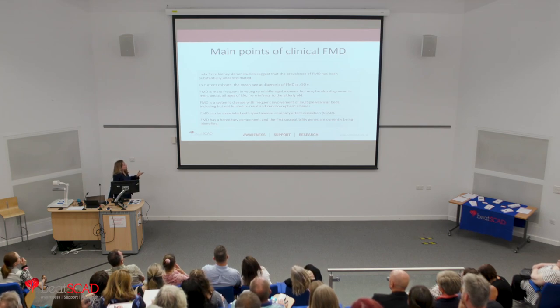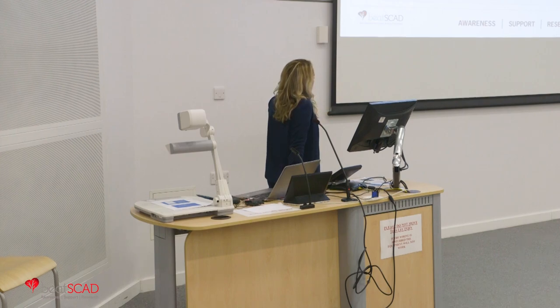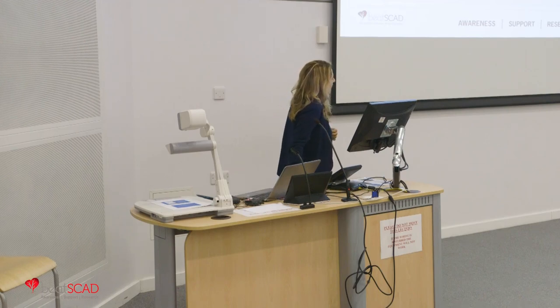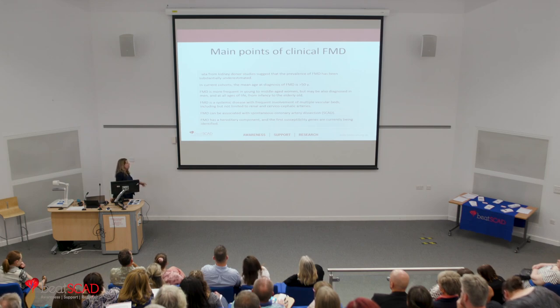Data from kidney donor registries suggest the prevalence of FMD is actually much higher and underestimated, including in patients not known to be hypertensive. The mean age of diagnosis tends to be around 50, affecting mainly young and middle-aged women but also men and all ages from infancy to elderly. It tends to be a systemic disease, so when we see patients in clinic we look at all territories. It is also associated with spontaneous coronary artery dissection, and there is a hereditary component.